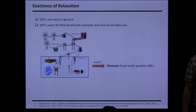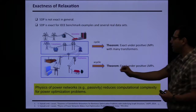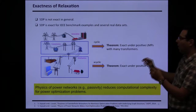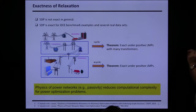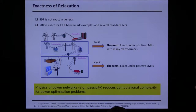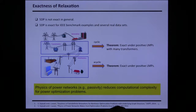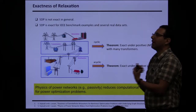We proved that for distribution networks, which are acyclic, as long as the locational marginal price (LMP) of electricity is non-negative, SDP works. For transmission networks, as long as the price of electricity is non-negative and we have transformers, SDP works. In other words, we showed that the physics of power networks reduces computational complexity. However, the price of electricity is not always non-negative — sometimes you are paid to consume power to satisfy laws of physics.